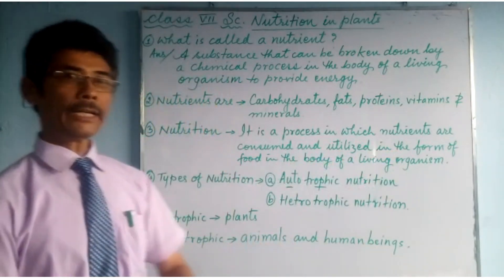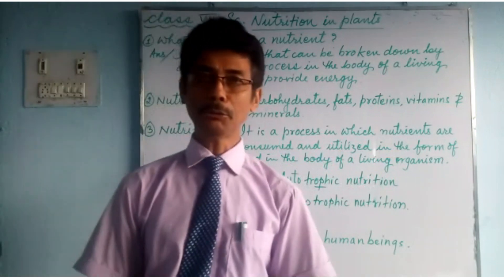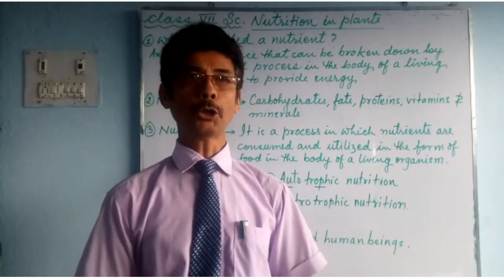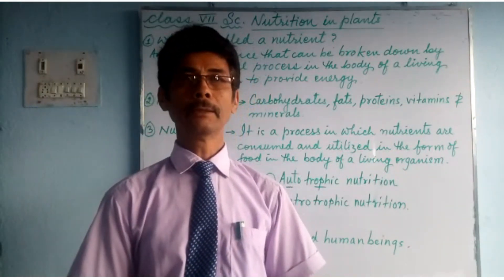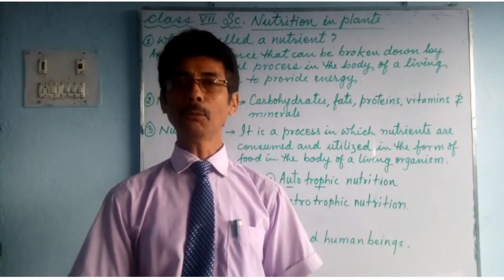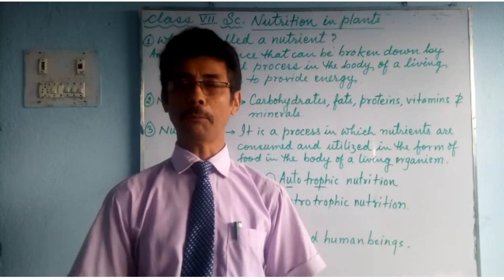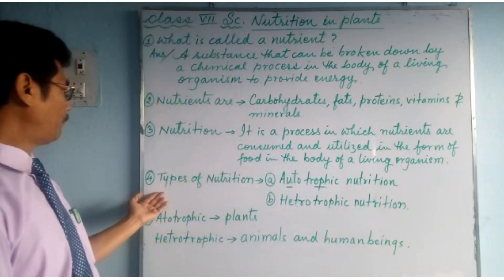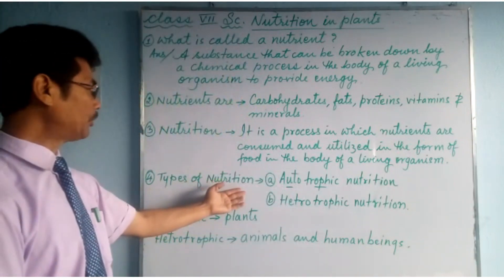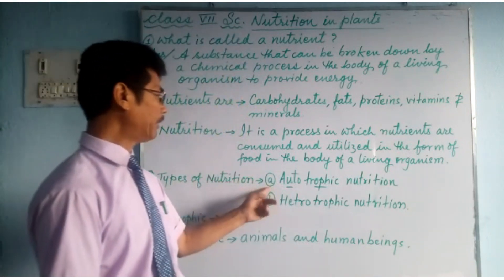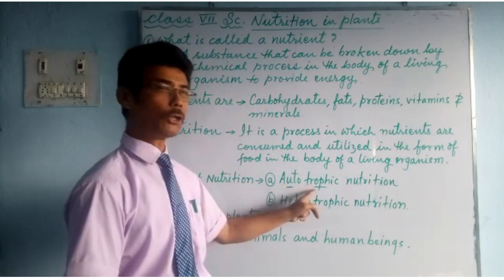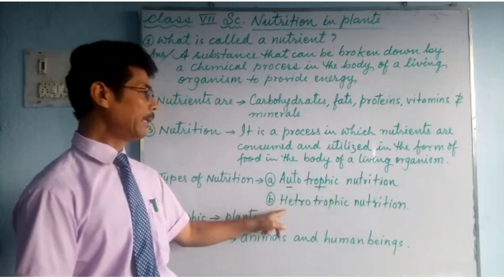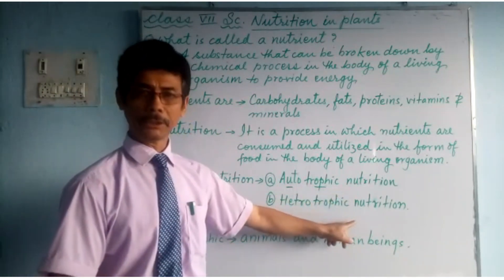Now, there are two types of nutrition. Number 4, types of nutrition: Number A is autotrophic nutrition, and Number B is heterotrophic nutrition.